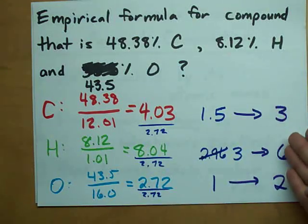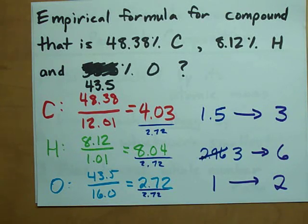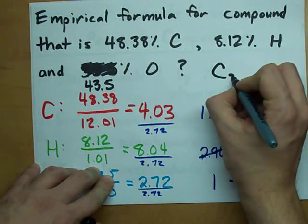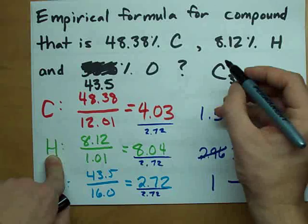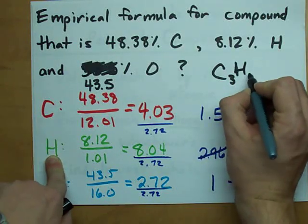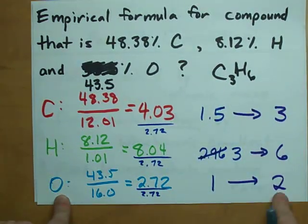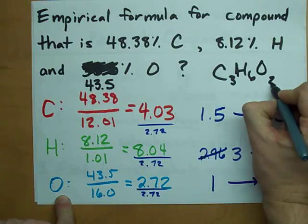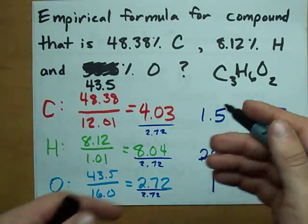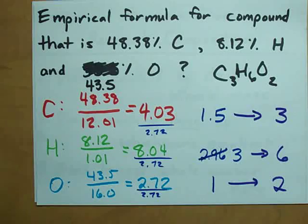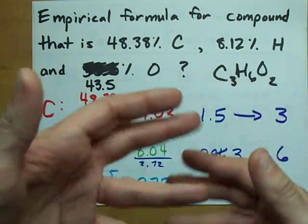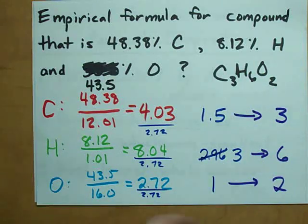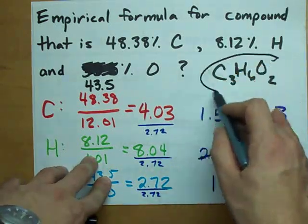Now what you'll notice is that that's the same ratio as 1.5 to 3 to 1, but we've adjusted these so that they're whole numbers. Long story short, the empirical formula for this is C3H6O2. 3 and 6 and 2 don't have any common factors other than 1, and so we can't reduce that similar to how we reduce fractions. That's the empirical formula we want. I'm even going to circle it to celebrate.